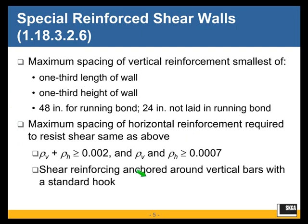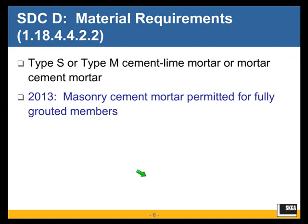Shear reinforcement has to be anchored around vertical bars with a standard hook — we'll look at some examples and see that in more detail. In seismic design category D and higher, the requirement is for type S or type M cement lime mortar or mortar cement mortar. There are basically three types of mortar: masonry cement, mortar cement, and Portland cement lime mortar. Only Portland cement lime mortar or mortar cement — considered equivalent to Portland cement lime mortar — are allowed in SDC D and higher, and it has to be at least type S mortar. One change in the 2013 code is that masonry cement mortar is permitted for fully grouted members, so it's relaxed a little bit.